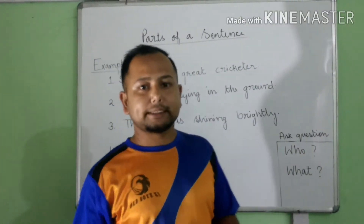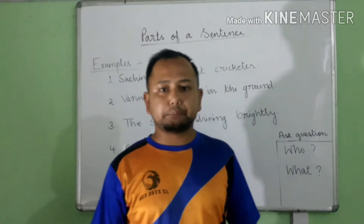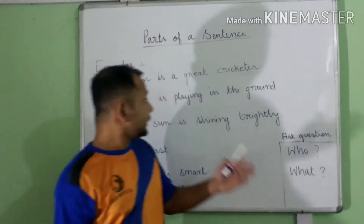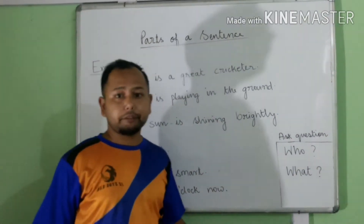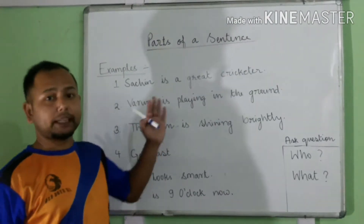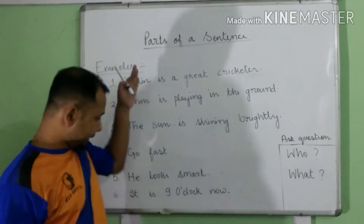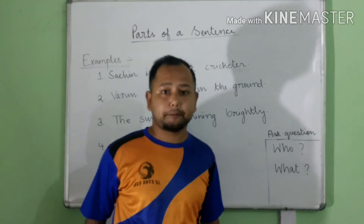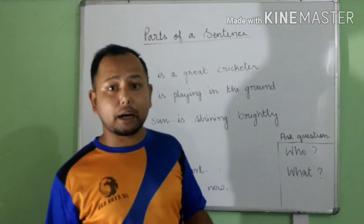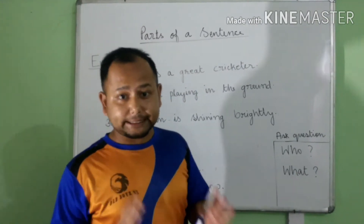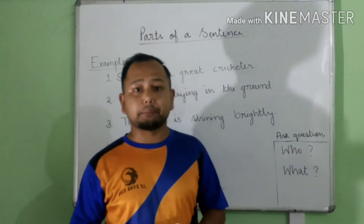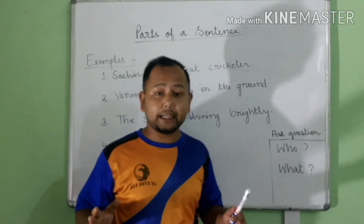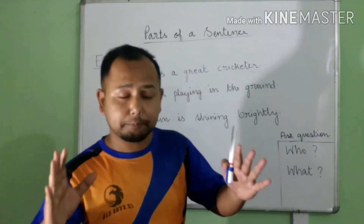Now let's see how to identify the subject and predicate in a sentence. Some examples are given. We will try to identify the subject and predicate in these sentences. Subject is the part of a sentence about which something is said.